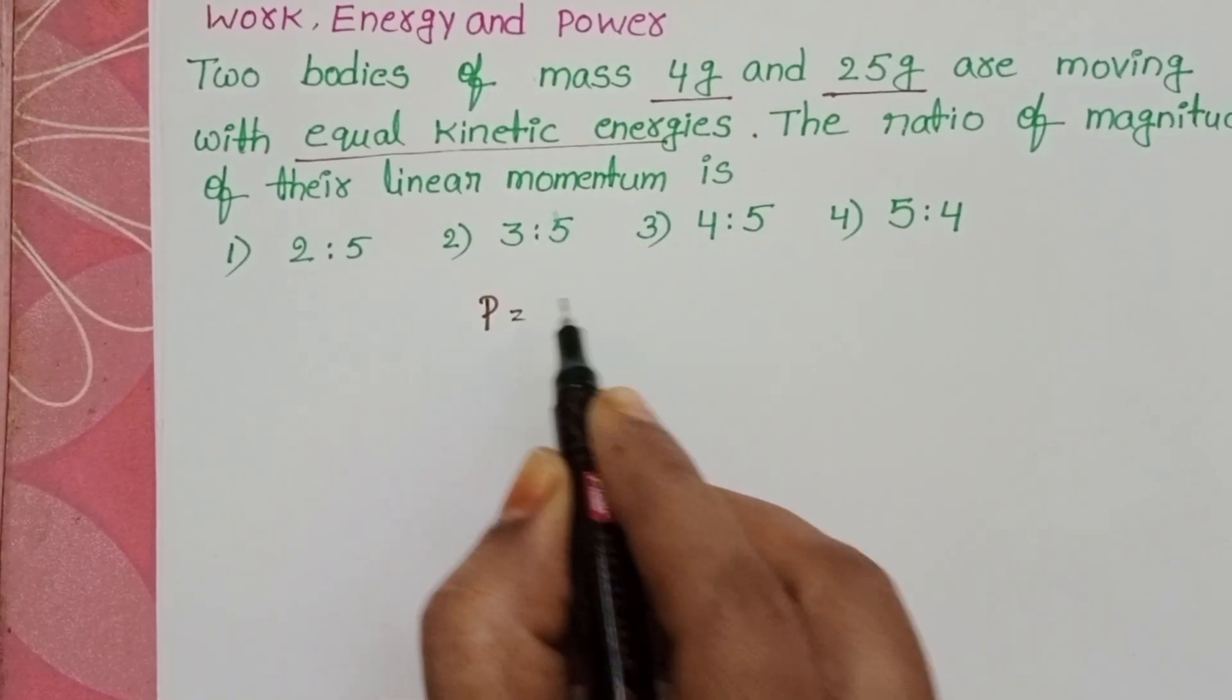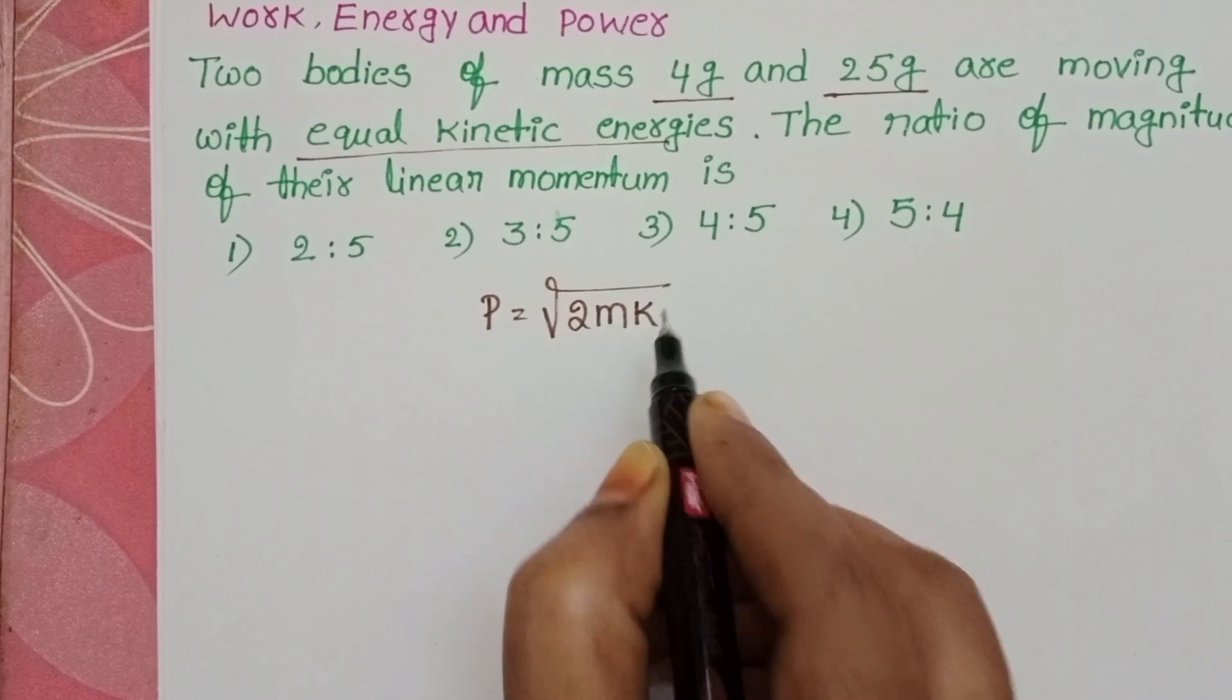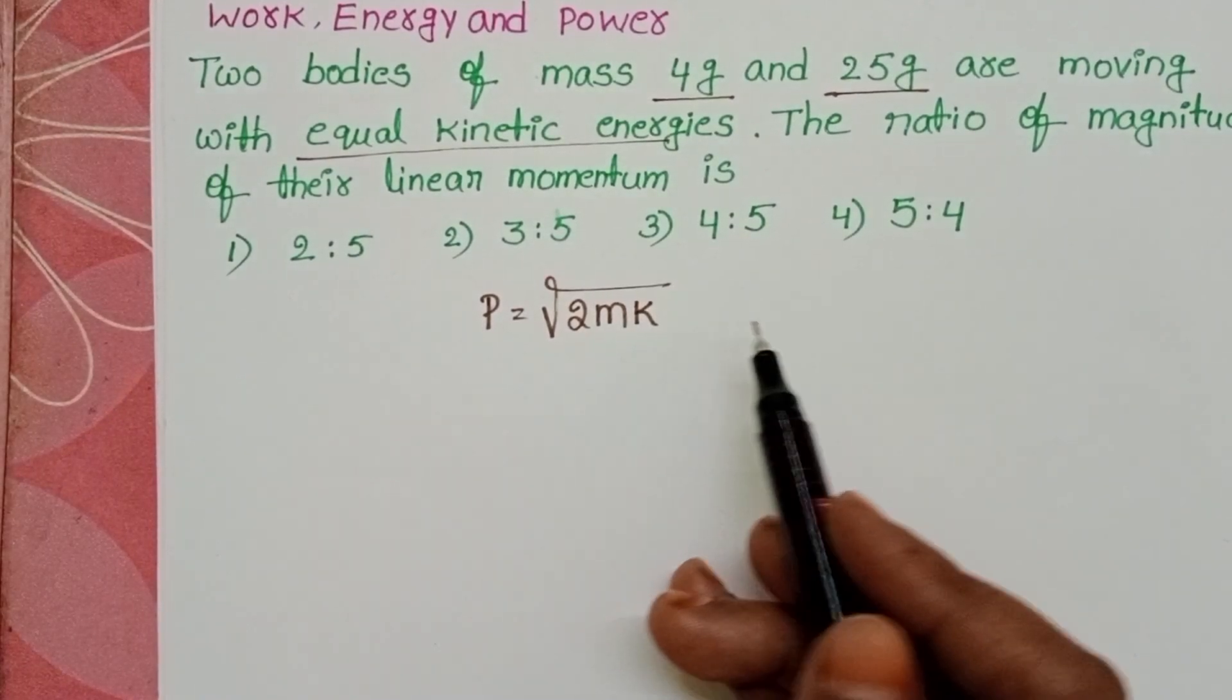Linear momentum equals square root of 2mk, where m is the mass of the body and k is the kinetic energy.